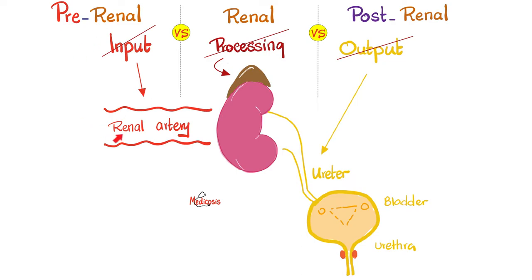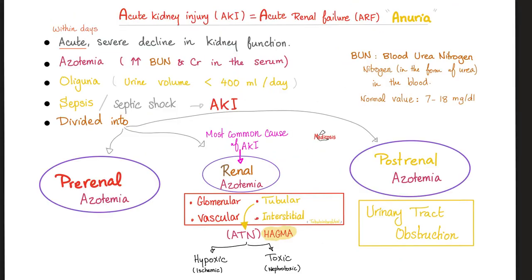Pre-renal azotemia: not receiving enough oxygen because not enough blood is delivered. Intrarenal azotemia: not enough blood (hypoxic) or damage by a toxin (toxic). Post-renal: usually caused by obstruction of the outflow. Remember that acute kidney injury may present with oliguria — less than 400–500 mL of urine per day — or even anuria, but it doesn't have to; some patients have AKI with normal urine volume.